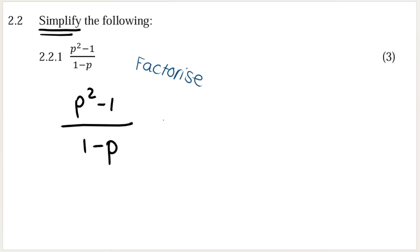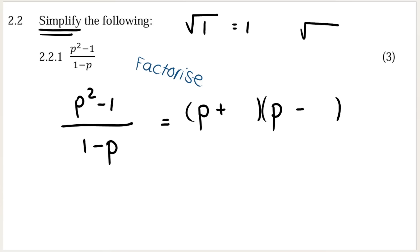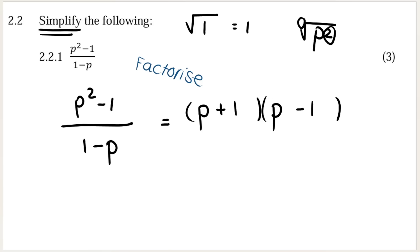Take a look at the numerator — can I factorize it? Yes, it's difference of two squares. How do we know? There are two terms, a minus in between, a square number — the square root of one gives me one — and even exponents, since two is an even number. So how we do difference of two squares is plus-minus brackets. We do p and p, because the square root of p squared is p. Then the square root of one is one, giving one in each bracket.